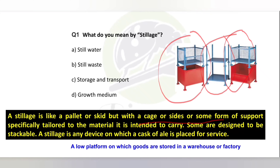It has wheels for easy movement, and sometimes you have to ship it when there are many manufacturing items you need to take from one place to another. So what you see in that structure is stillage. It can be metallic, plastic, or sometimes wooden. It is made strong enough to hold a lot of weight. It is basically used in industries or warehouses and is used for storage and transport.